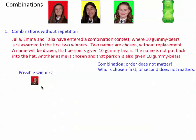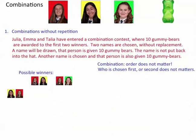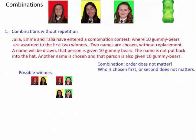If we choose Emma first, can we choose Talia second? Sure. If we choose Emma first, can we then choose Julia? Yeah, why not. If we choose Talia first, can we then choose Emma? No, because we already have that — there's really no difference between Emma winning and Talia winning, and Talia winning and Emma winning. If we choose Talia first, can we choose Talia second? No, because it's without replacement. We're not putting Talia back in.